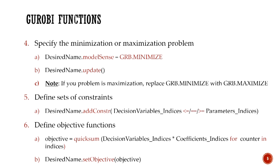The next step is to define sets of constraints. We call the model and use the reserved word add_constr. Then we have the decision variables with less-than-or-equal, equal, or greater-than-or-equal to the parameters. The reserved word here is add_constr.